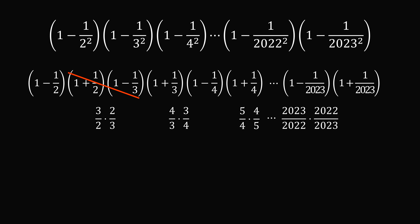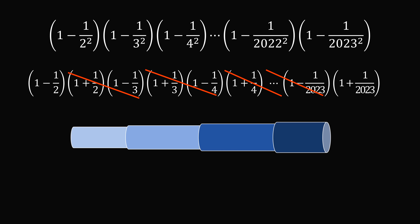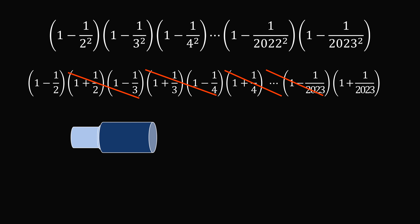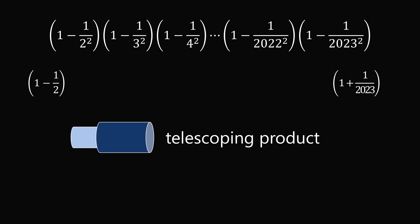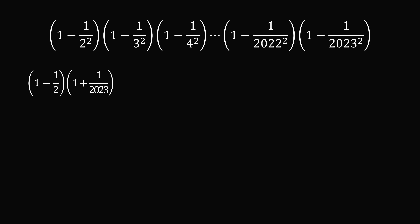All of these pairs cancel out — this is what's known as a telescoping product. Like a telescope that retracts upon itself, it collapses so only the very beginning and very end survive. We just need to simplify: 1 minus 1 over 2 is equal to 1 half, and 1 plus 1 over 2023 is equal to 2024 divided by 2023. So the product simplifies to 1012 divided by 2023, and that's the answer.